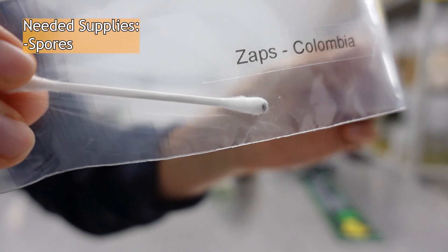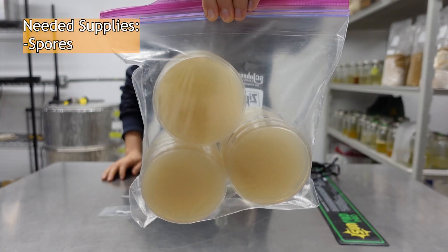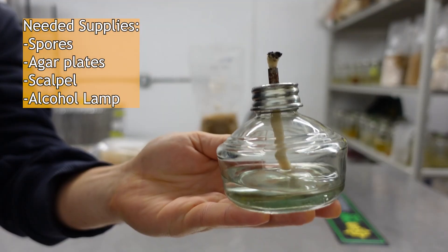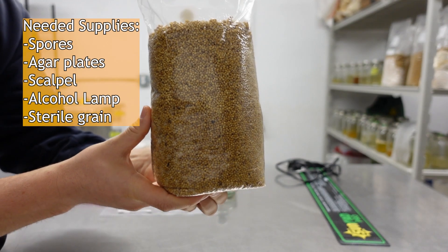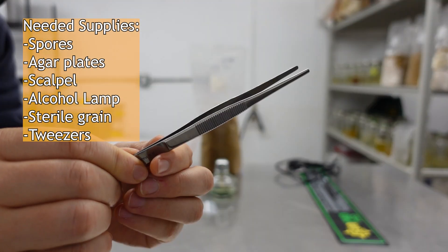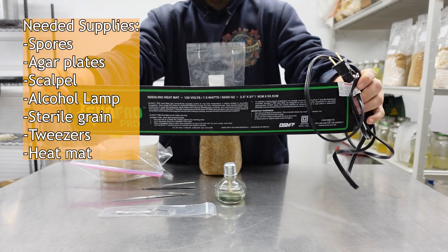To get started, you will need a spore swab, print, or syringe, sterile agar plates, a scalpel, a flame lamp or lighter, sterile grain and substrate for propagation and fruiting. Tweezers are recommended but not required. A heat mat or incubator is also recommended.